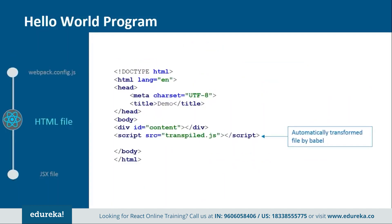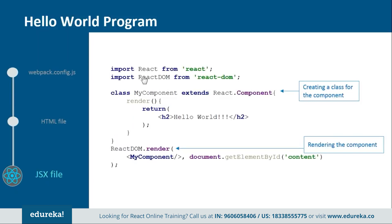Next we have the HTML file — a basic file where we add one div tag and one script tag. Inside the div tag we provide one ID so we can refer to it from the JSX file, and the script tag references the transpiled file created by Babel. Then the JSX file imports React and ReactDOM, creates a component called MyComponent that extends React.Component, and inside it we create a render function to return the HTML representation.